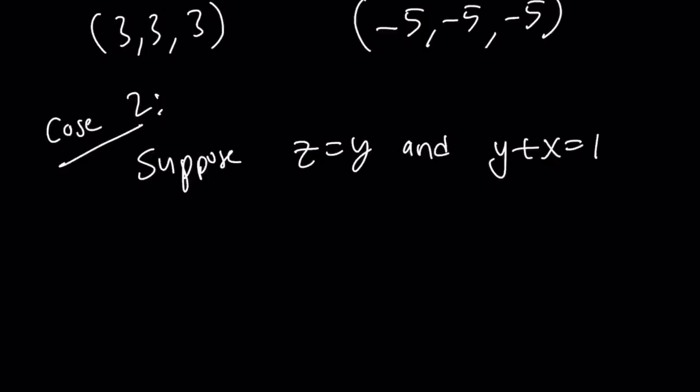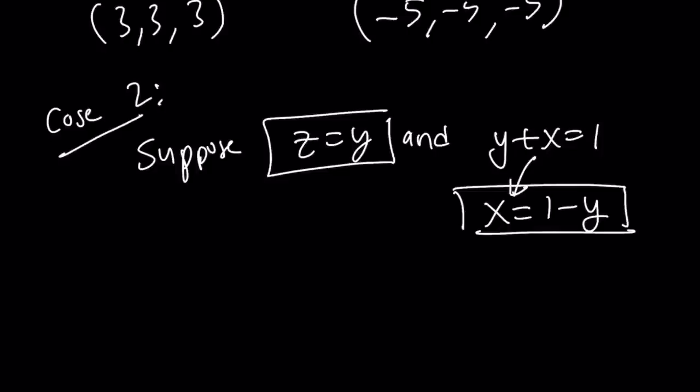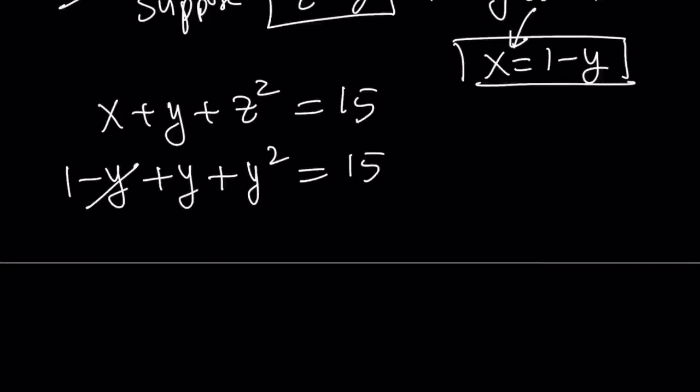So, this is kind of nice because now z is equal to y. So, I can replace z with y, and I can also replace x with 1 minus y. So, now everything can be written in terms of y. x plus y plus z squared equals 15. Now, I can replace x with 1 minus y, y with itself, and z with y. So, I get the following. y cancels out, leaving us with something even simpler, a quadratic but super easy to solve: y squared equals 14.